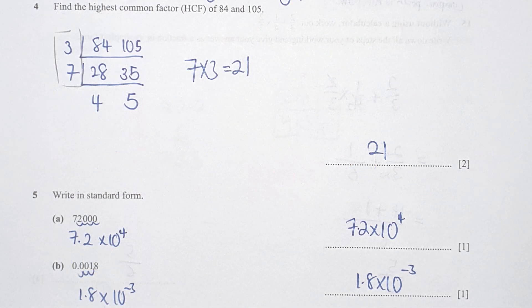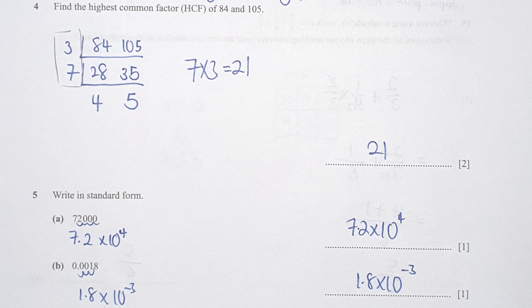For section 4, find the HCF. After dividing it by 3 and 7, I cannot divide by the same factor anymore. Hence 3 times 7 should be 21.